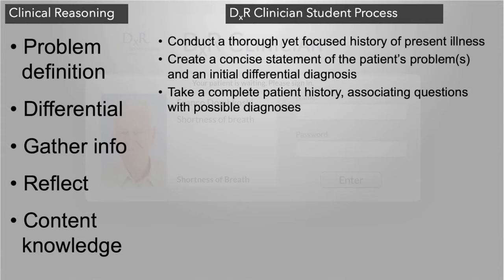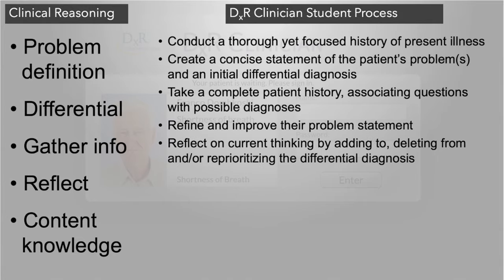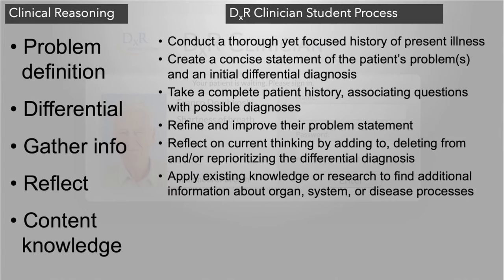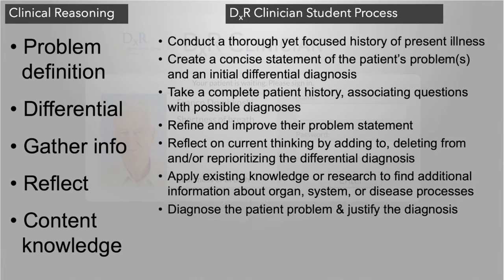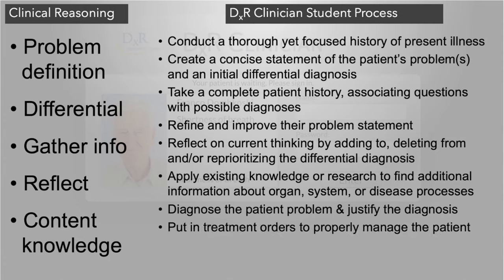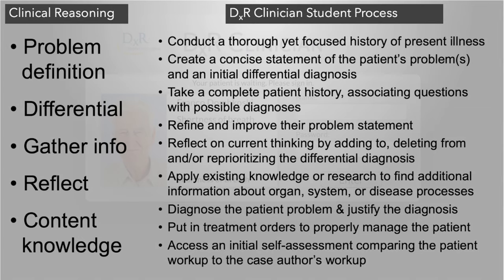Students take a focused, complete patient history, associating interview questions with any possible diagnoses. They refine and improve their problem statement, reflect on their current thinking by adding to, deleting from, or reprioritizing their differential diagnoses. They apply existing knowledge or research to find additional information about organ systems and disease processes, diagnose the patient and provide thorough diagnostic justification, put in treatment orders to properly manage the patient, and access an initial self-assessment comparing their workup with the case author's workup.